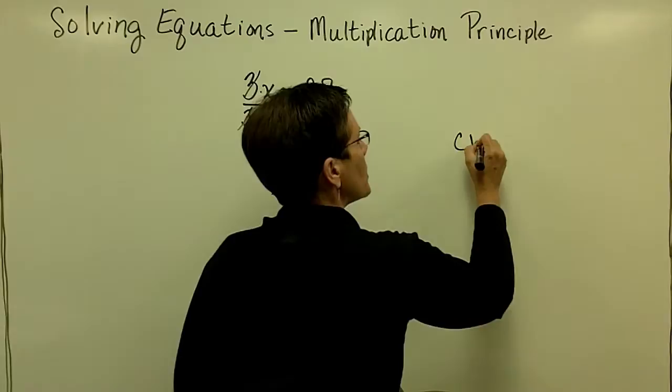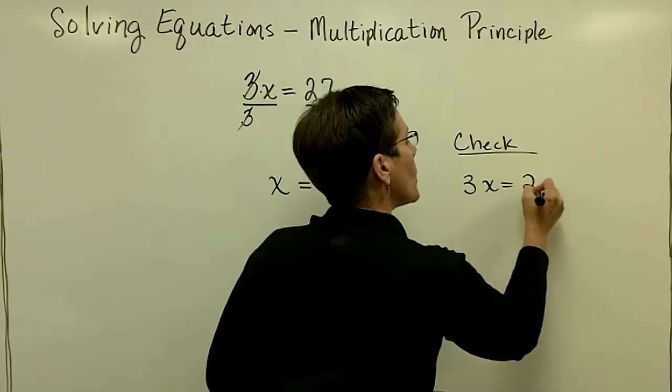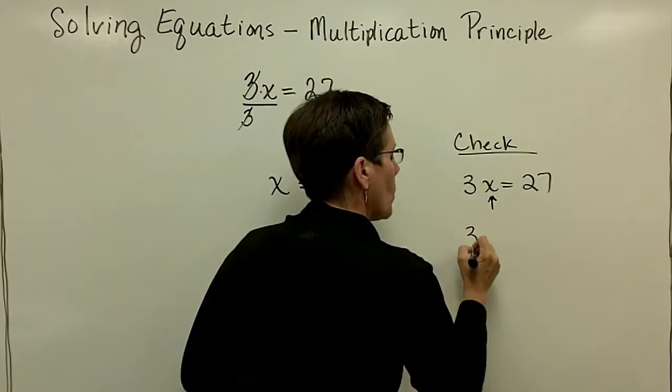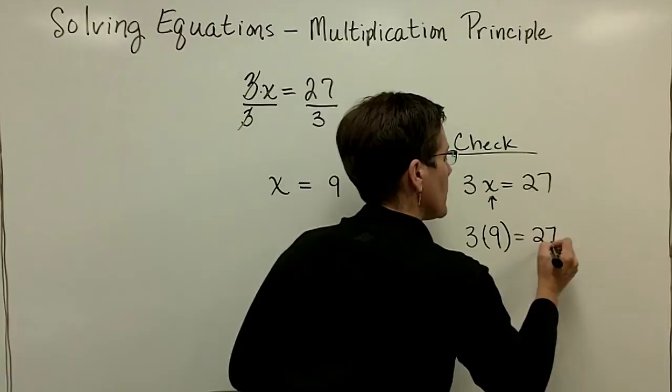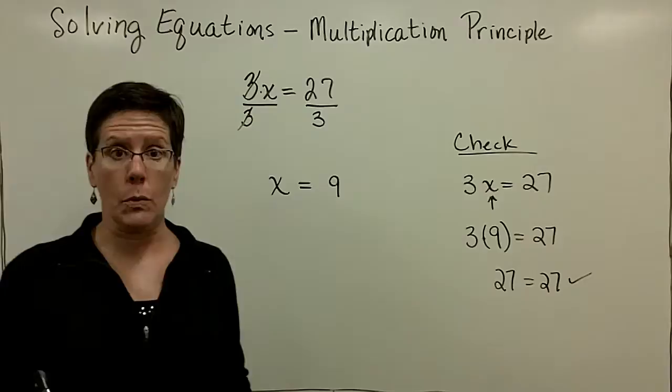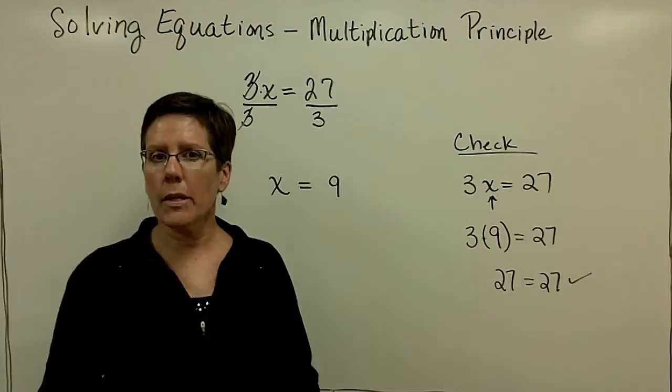Please remember that the original problem here was 3x equals 27. So when you substitute in for x a value of 9, what you have is 3 times 9 — or you can put parentheses around it — equals 27. You can say yep, 3 times 9 is 27, and 27 does equal 27.